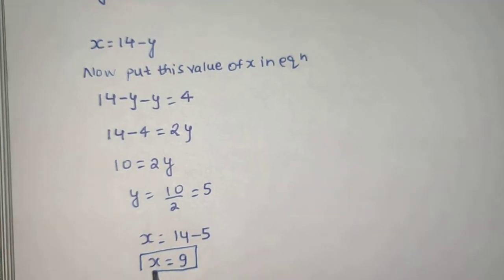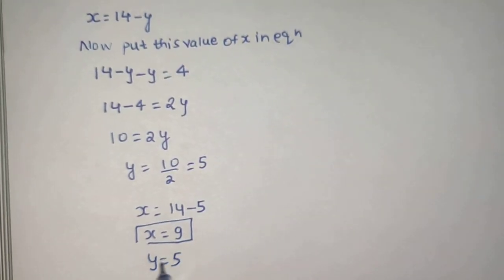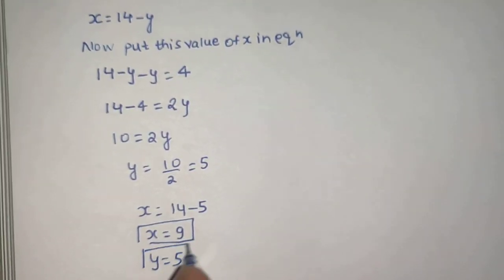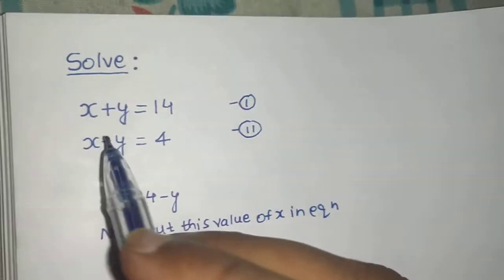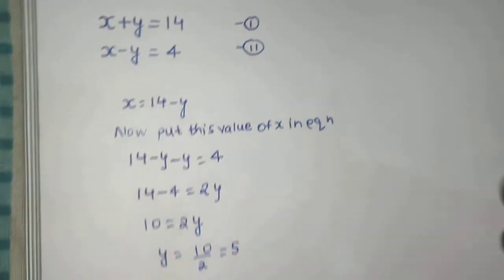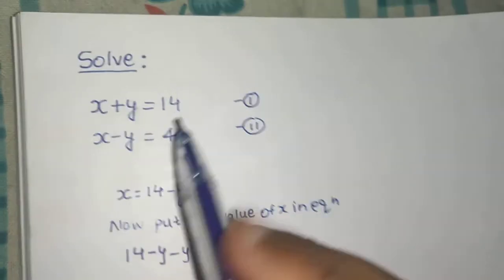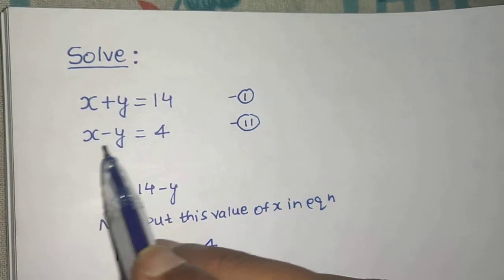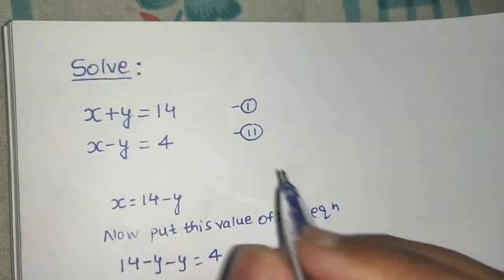So, x equals to 9 and y equals to 5 is the solution of this equation. You can check: 9 plus 5 is 14, and 9 minus 5 is 4.